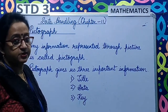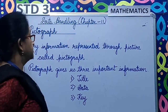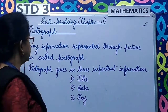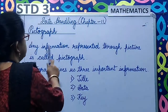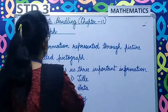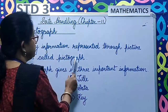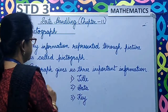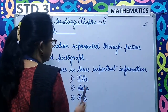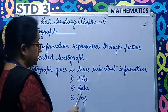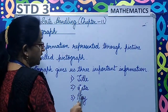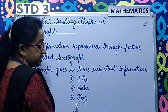Now we learn pictograph. So children, what is pictograph? Any information represented through a picture is called a pictograph. Pictograph gives us three important pieces of information: title, data, and a key.